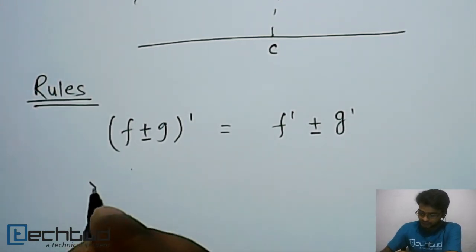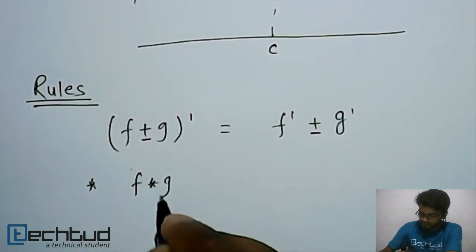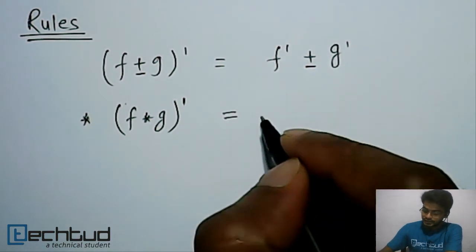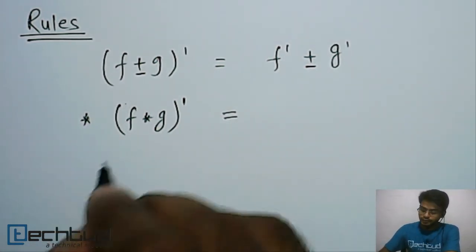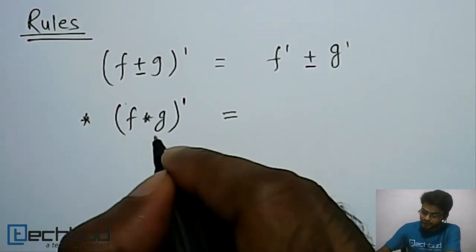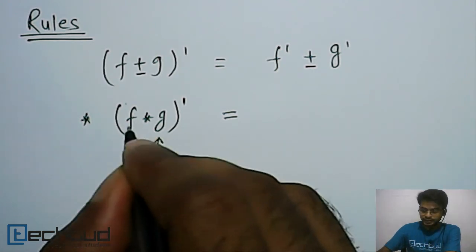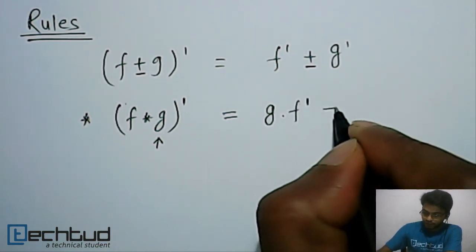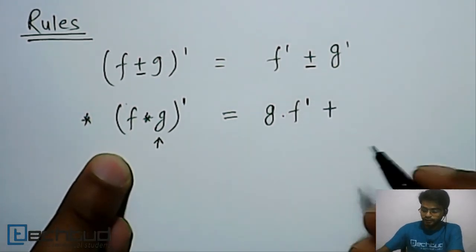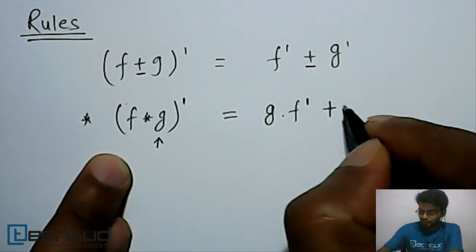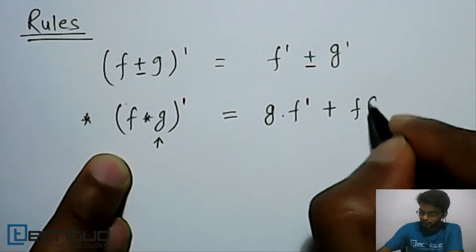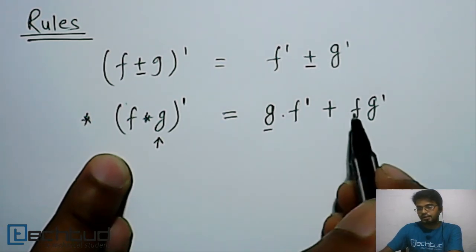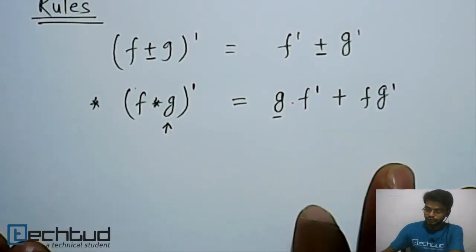This is important: if you have f times g and you need to find the derivative of this product of two functions, what we do is keep one function constant and find the derivative of the other. So we keep g constant and find f'. Then we repeat by keeping the other function constant and differentiating the remaining one — so we get f times g'. Basically we keep one function constant at a time and differentiate the other, then interchange the process.